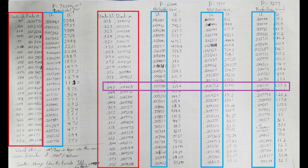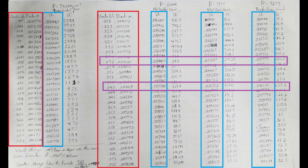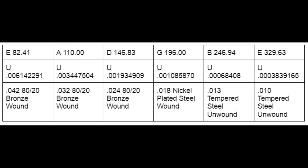Our A string has a linear density of 0.00344, which matches close to a 0.032 inch diameter, 8020 bronze wound string. Here are the chosen strings with all six frequencies and their linear densities.